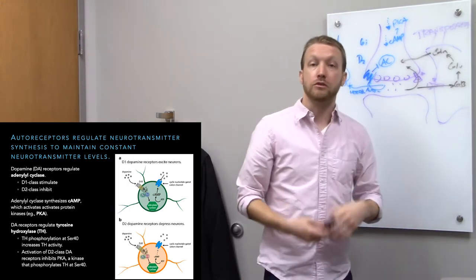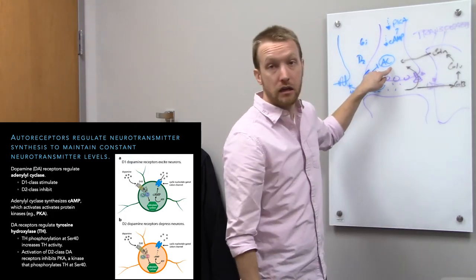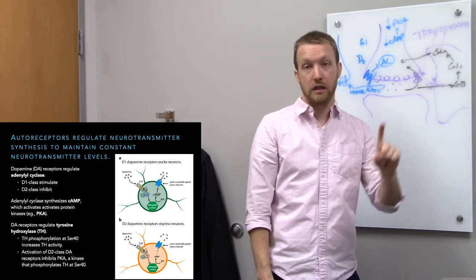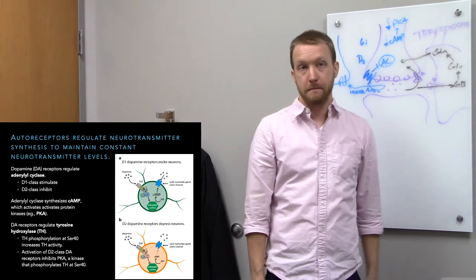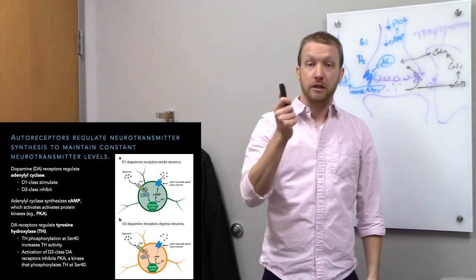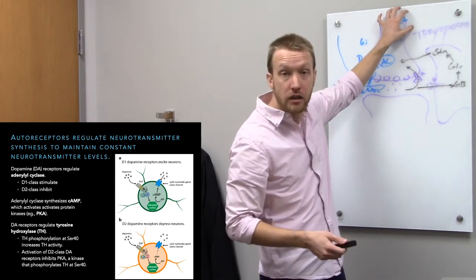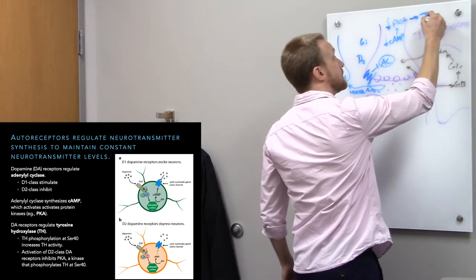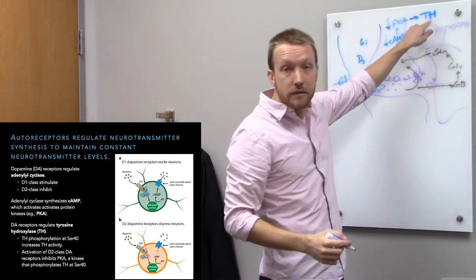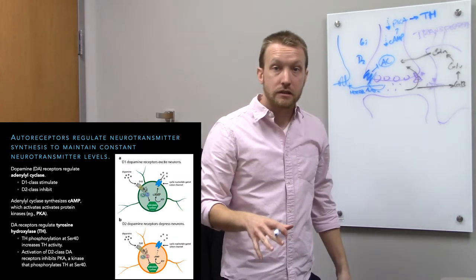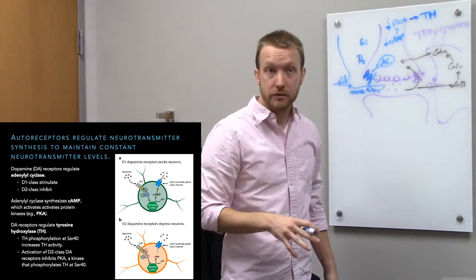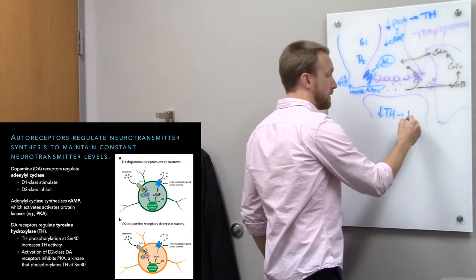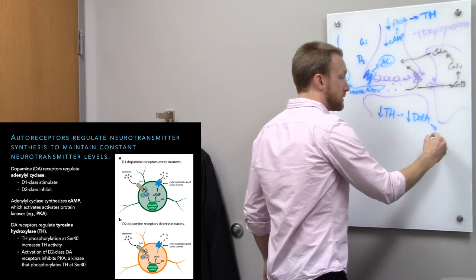Not every dopamine receptor does this — D1 dopamine receptors have the opposite effect; they're Gs-coupled, stimulate adenylyl cyclase, increase cyclic AMP, and thus increase protein kinase A. But dopamine neurons don't have a high level of D1; they have a high level of D2. Therefore dopamine neurons in the presence of dopamine see a decrease in protein kinase A activity and reduced phosphorylation of its targets. One of those targets is tyrosine hydroxylase, the first enzyme needed to synthesize dopamine. If we decrease tyrosine hydroxylase activity, we decrease dopamine levels. So when dopamine binds its autoreceptor, that drops tyrosine hydroxylase activity, decreasing L-DOPA and thus dopamine levels.